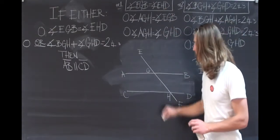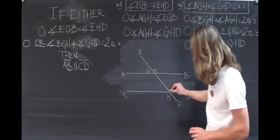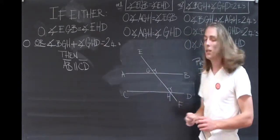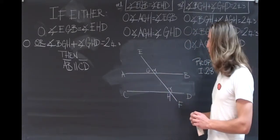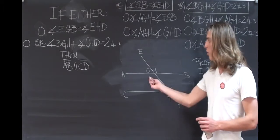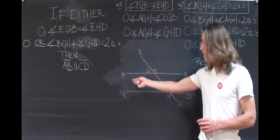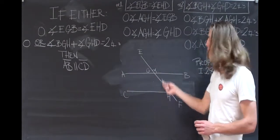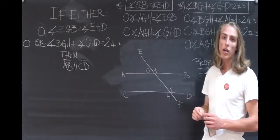The first step is to mark our equal angles. Then, remember that from Proposition 15, we know that vertical angles, that is, AGH and EGB, are equal to one another.